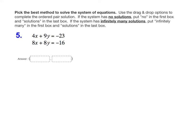Number five asks us to pick the best method to solve the system of equations and use the drag and drop options to complete the ordered pair solution. If the system has no solution, put no in the first box and solutions in the last box. If the system has infinitely many solutions, put infinitely many in the first box and solutions in the last box.